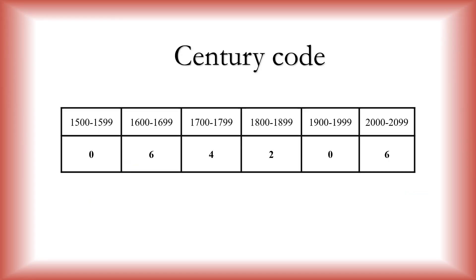The codes for the centuries begin from the 16th century — from 1500 to 1599, the code is 0; 1600 to 1699 is 6; 1700 to 1799 is 4; 1800 to 1899 is 2; 1900 to 1999 is 0; and 2000 to 2099 is 6. Just remember the sequence starting from 1500: it is 0, 6, 4, 2, 0, 6.